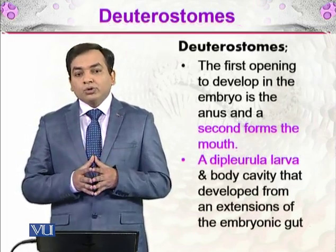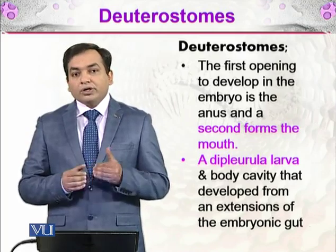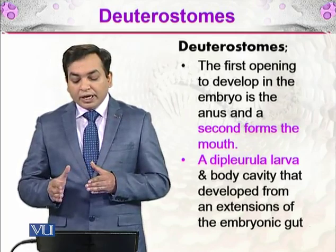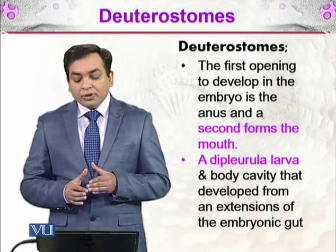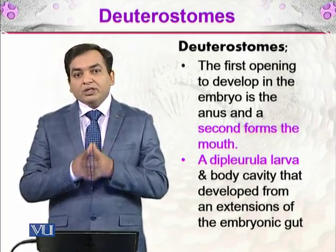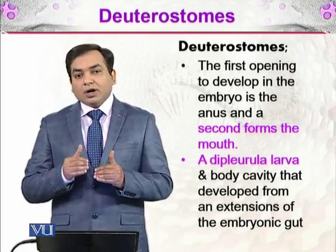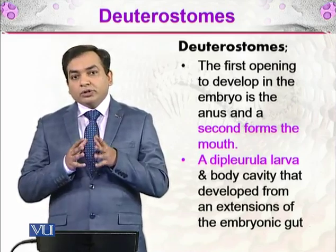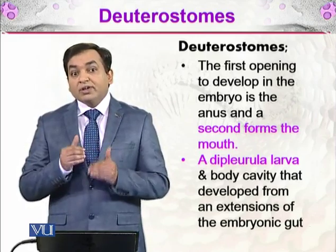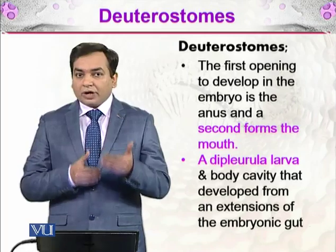What are the deuterostomes? The deuterostomes are organisms which have the first opening to develop in the embryo being the anus, and the second opening forms the mouth. So deuterostomes are organisms which have two openings developed in their embryos.